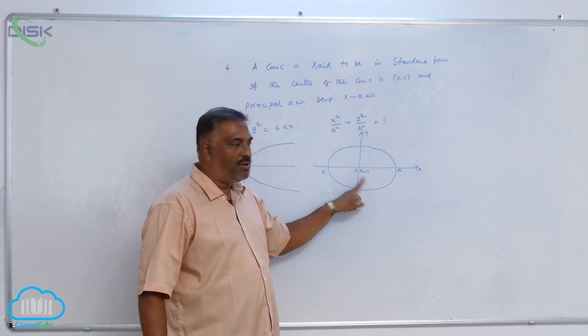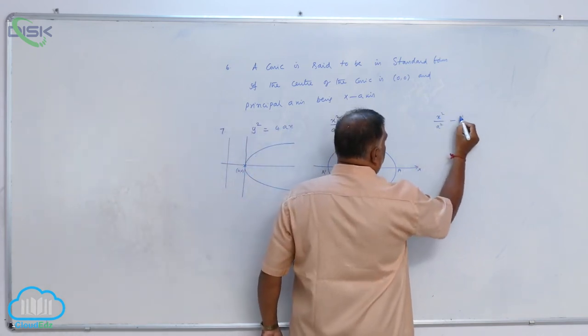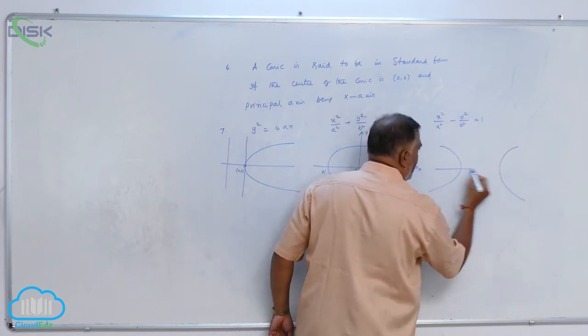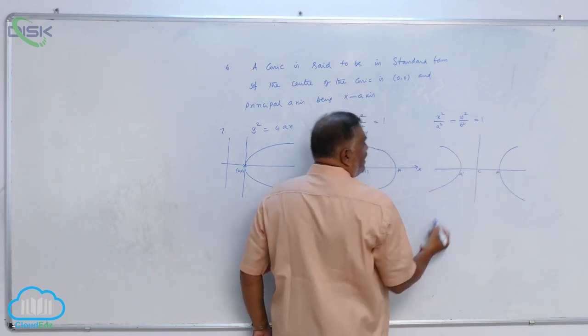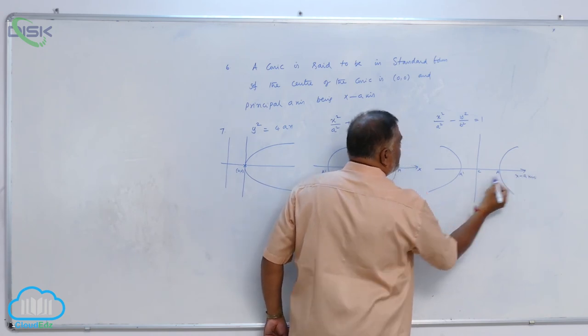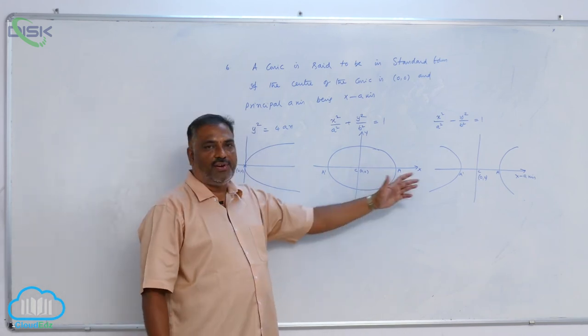In case of a hyperbola, x²/a² - y²/b² = 1, you can see very clearly this is the center, A and A' are here. The principal axis is the x-axis, and the center is (0,0). I think it is very clear for you.